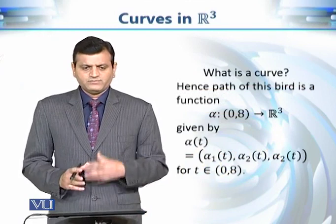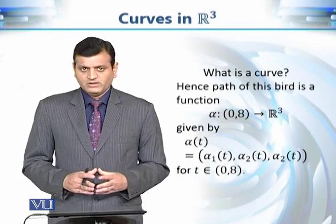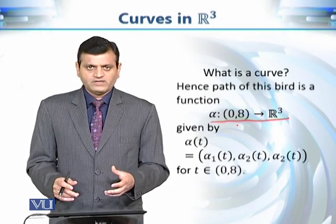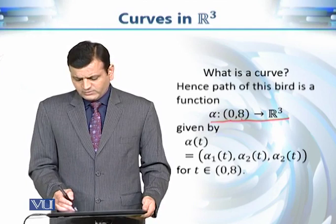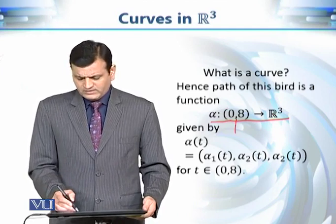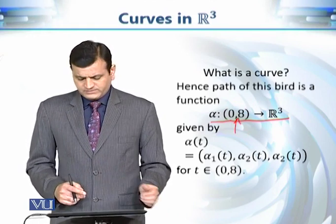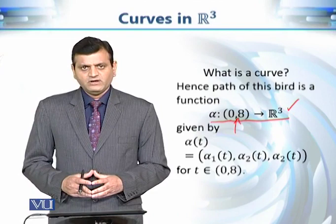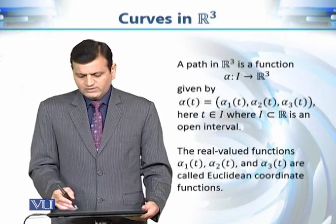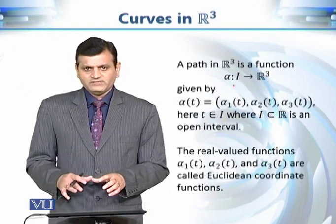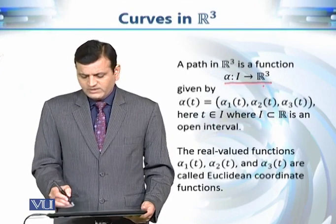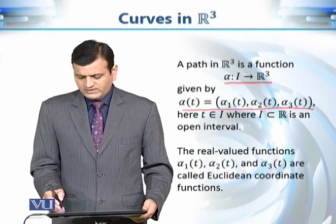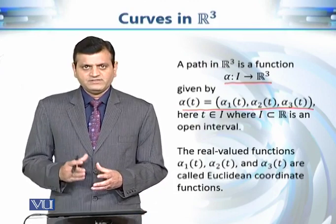So we can say that a curve is — roughly speaking, because we will impose more conditions on this definition shortly — basically a function. In this particular example, it is a function from the open interval (0, 8) to R³. We use an open interval to avoid mathematical difficulties. In general, a path in R³ is a function from an open interval I of R to R³, having three coordinate functions that all depend on the parameter t.